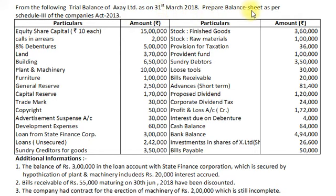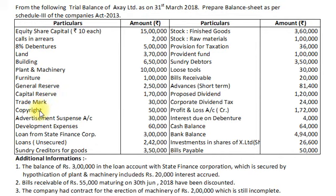prepare a balance sheet as per Schedule III of the Companies Act 2013. The particulars include: Equity Share Capital of Rs.10 each, Calls in Arrears, 8% Debentures, Land, Building, Plant and Machinery, Furniture, General Reserve, Capital Reserve, Trademark, Copyright, Advertisement Suspense Account, Development Expenses, Loan from State Finance Corporation, Loans Unsecured, and Sundry Creditors.